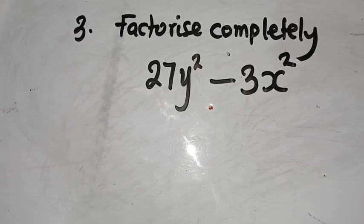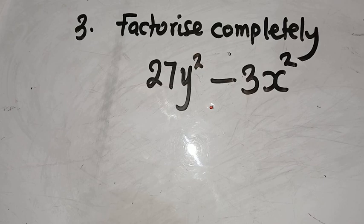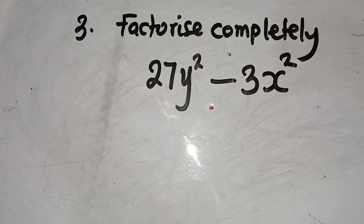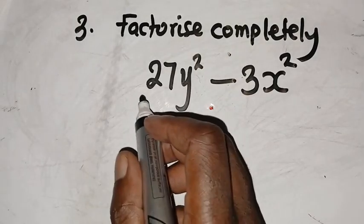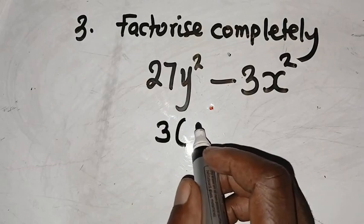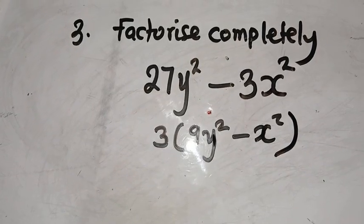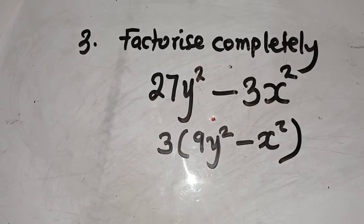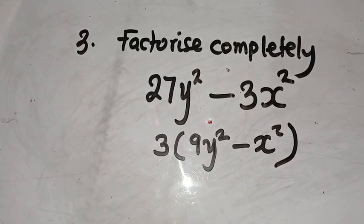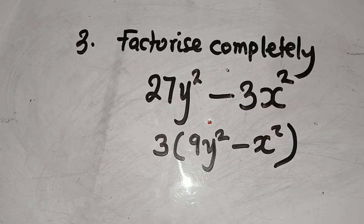Let me take you to question 23 — this is question 23, ladies and gentlemen. We are being requested to factorize this expression. We need to look at what method to use. We could use the difference of two squares, but before that we need to use the common factor method — factorizing out 3, leaving us with 9 inside the brackets.